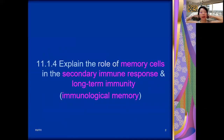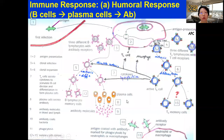First, let's explain the role of memory cells in the secondary immune response as well as long-term immunity. This is called immunological memory. Remember when you learned about the specific immune response - the entire process starting from infection, followed by phagocytosis, antigen presentation by the macrophage, then clonal selection of T helper cell and B cell, and clonal expansion of T helper cell into active T helper cell and memory cells.